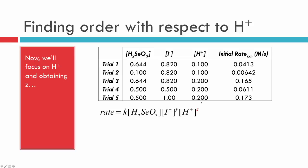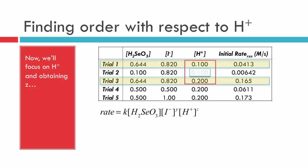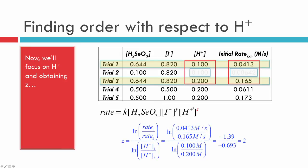Now let's solve for z by looking at trials one and three, which share the same H2SeO3 and I⁻ concentrations, but have different H⁺ concentrations and initial rates. So z is related to H⁺. Plugging the values from the table into the equation gives us z = 2. Note: there are two separate natural log calculations to perform — you cannot group them into one big natural log. Do the numerator, find that number, do the denominator, and then divide.